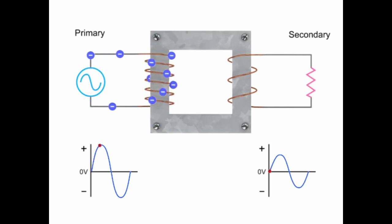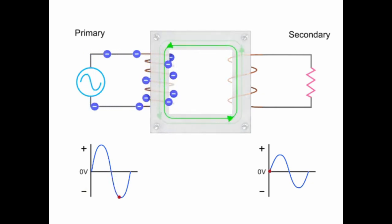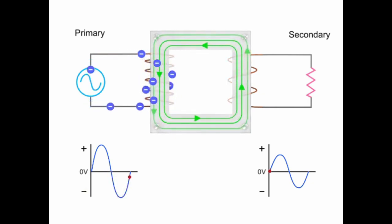The alternating current produces a changing magnetic field at the core of the transformer and generates the flux. The secondary coil reverses the flux into voltage and produces the desired voltage for the load.